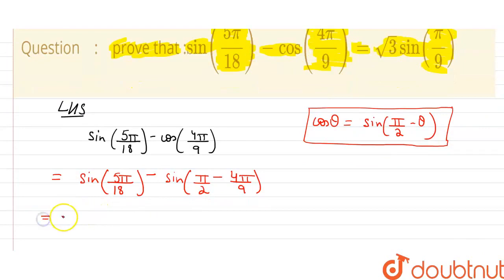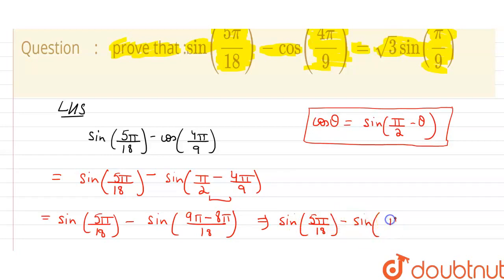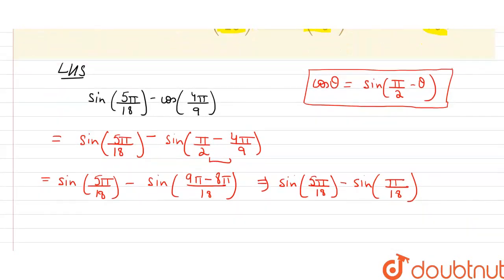So it is equal to sin 5π/18 minus, here we will take LCM. It is sin, 9 and 2 LCM is 18. It is 9π minus 8π. So that is equal to sin 5π/18 minus sin π/18.